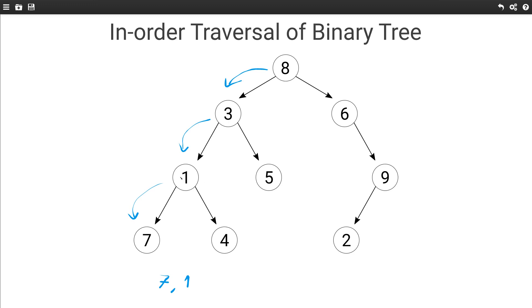Then we go visit the right subtree in order. Here again we want to visit the left subtree — in this case it is null — so we just visit the current node and then go visit the right subtree, which is also null. So we are done visiting the right subtree of 1, and we are done visiting the left subtree of 3, so we visit 3, and then we visit the right subtree of 3.